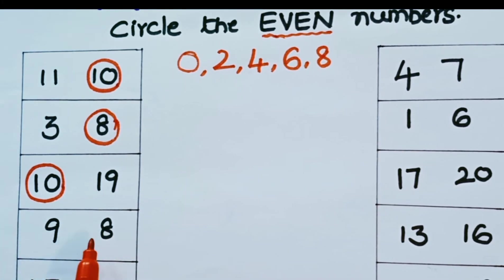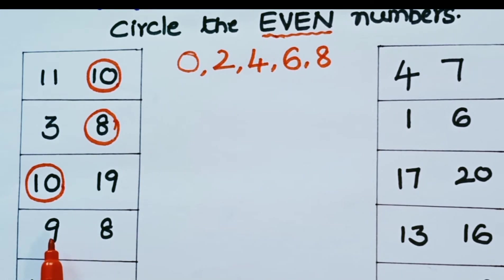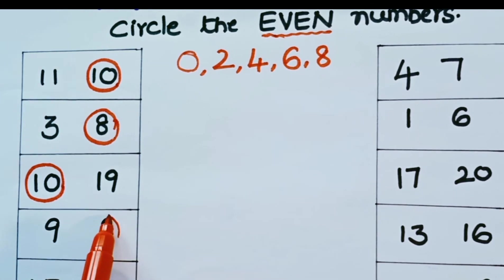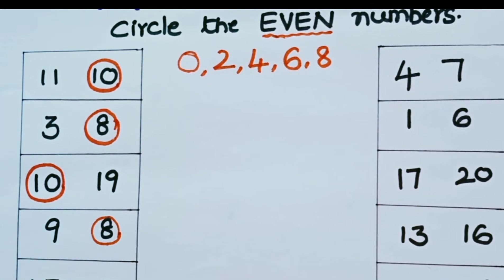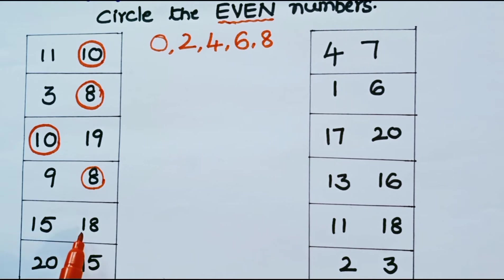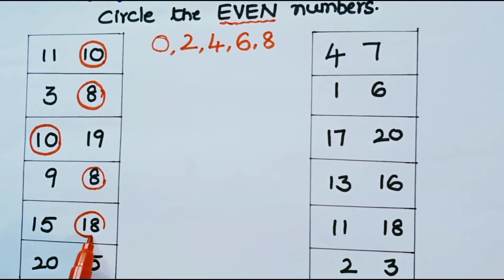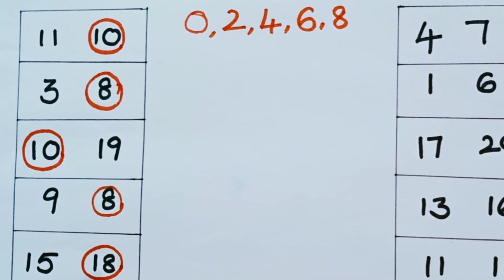Now the next row has 18 and 15. What is the ending number in 18? It is 8. Is 8 odd or even? It is an even number. And 15 is an odd number. So we should circle 18.